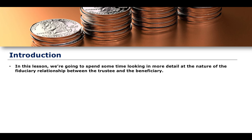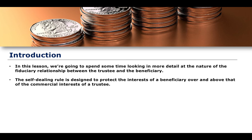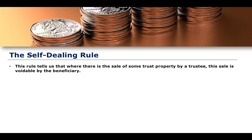For example, a solicitor and a client, a doctor and a patient — these are relationships of trust and confidence and so are considered to be fiduciary. The idea of the self-dealing rule is essentially designed to protect the interests of a particular beneficiary over and above the commercial interests of a trustee. Given that a trustee has a fiduciary relationship with a beneficiary, the self-dealing rule essentially protects the beneficiary's interests over the commercial interests of a trustee.